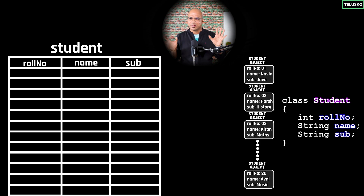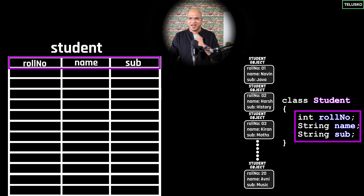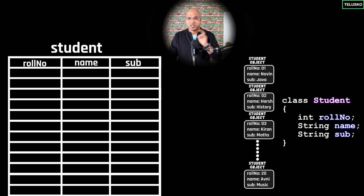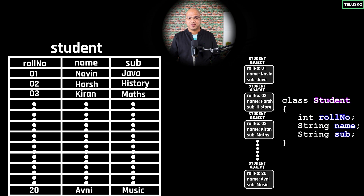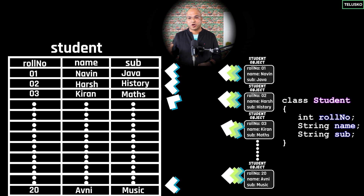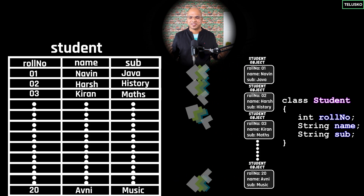At the start of the application you don't have data — you just have the column structure: roll number column, name column, favorite subject column. Can you say this class and this table are relatable? The class name is your table name, and the class variables are your columns. And every time you get a new object with different data, each object becomes one row. With 20 objects you get 20 rows — we are relating object-oriented concepts with database concepts, and that is Object Relational Mapping.